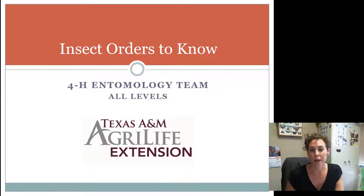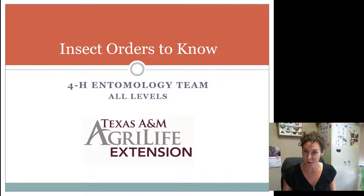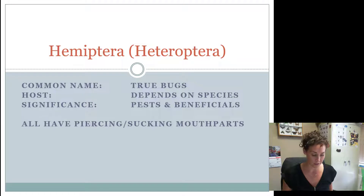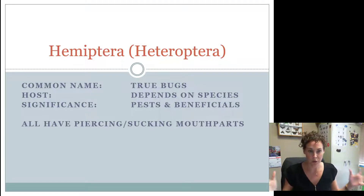Alright 4-H'ers, we're going to cover the order Hemiptera and look at the suborder Heteroptera. Hemiptera is a giant order, but to categorize them easier, they're grouped into three suborders.